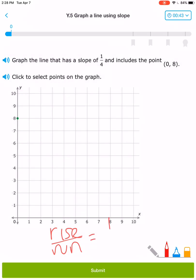If I have rise over run, that means I want to go up 1 over 4 to pick my next point. So 1 up and 4 over means that I'm putting a point 1, 2, 3, 4 right there.